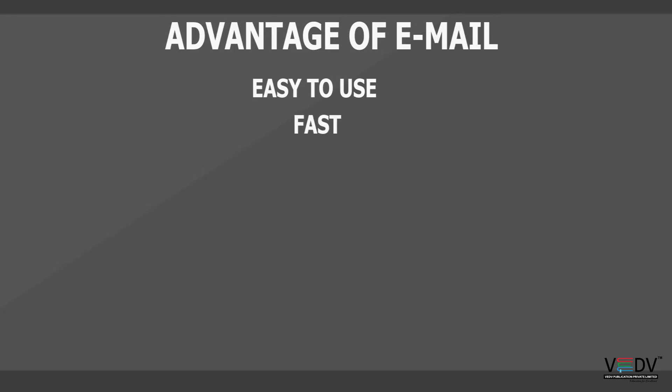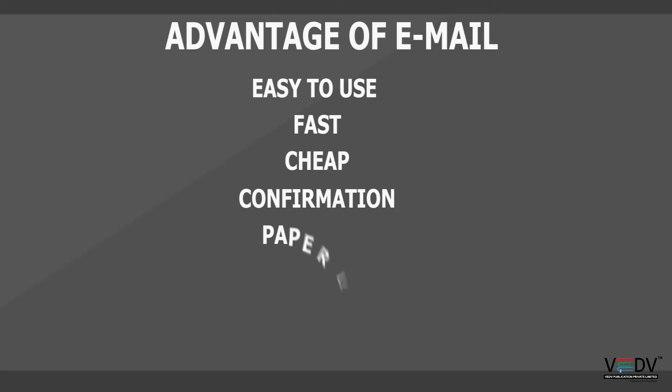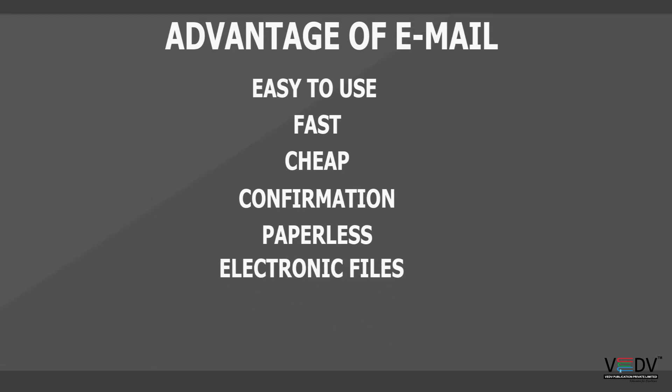When we get a message from anywhere in the world, we can send a message back quickly. Message and file sending to your mobile phone is very important. Confirmation: We can confirm whether our message has been delivered or not. Paperless: Email messages don't require paper, so we can say that email is an environmentally friendly way to communicate.